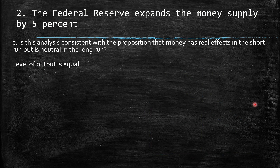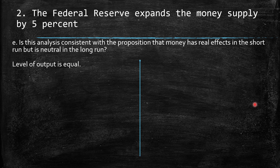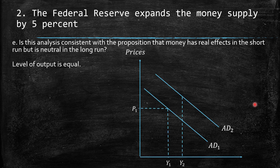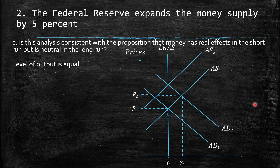e. Is this analysis consistent with the proposition that money has a real effect in the short run but is neutral in the long run? Yes. The level of output is exactly the same. There was a movement in demand and then a shift in supply. The only real difference between the short run and long run was the change in prices.